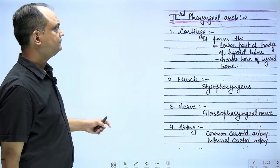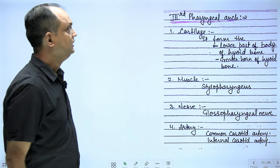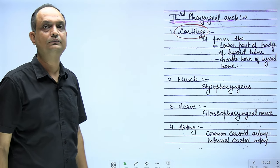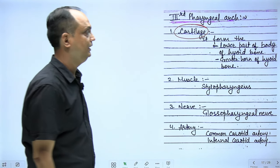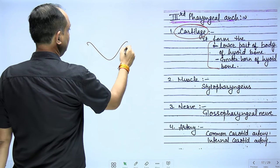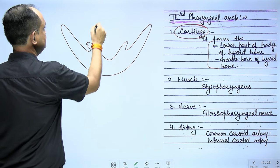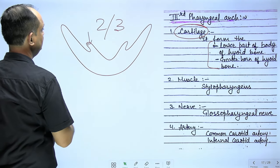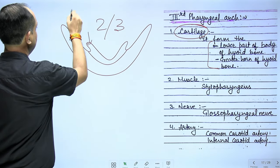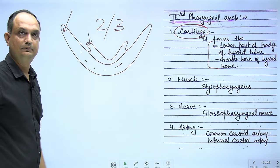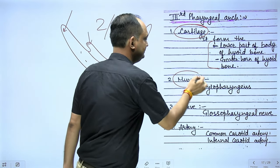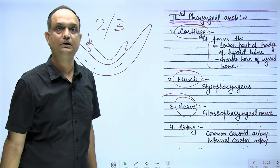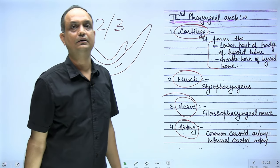The third pharyngeal arch cartilage forms the lower part of the body of the hyoid bone and the greater cornu. So the hyoid bone is developed from second and third arch cartilages: the second forms the lesser horn and upper part of the body; the third forms the greater horn and lower part. The third arch gives rise to one muscle — stylopharyngeus. Its nerve is the glossopharyngeal nerve and its arteries are the common carotid and internal carotid.